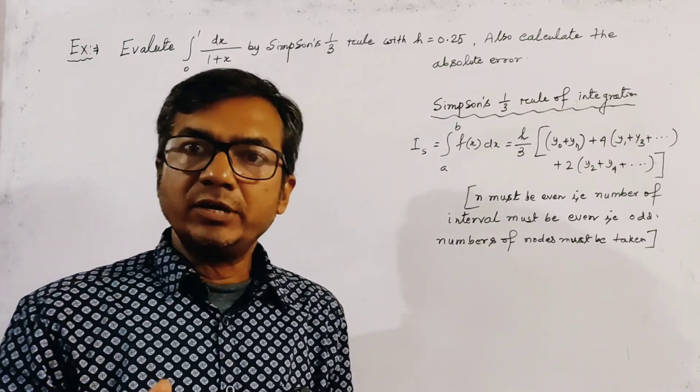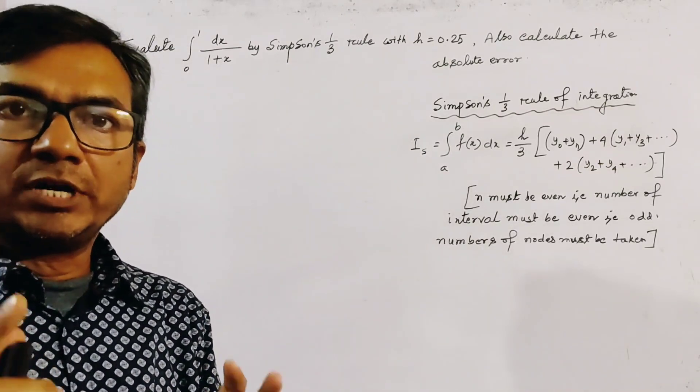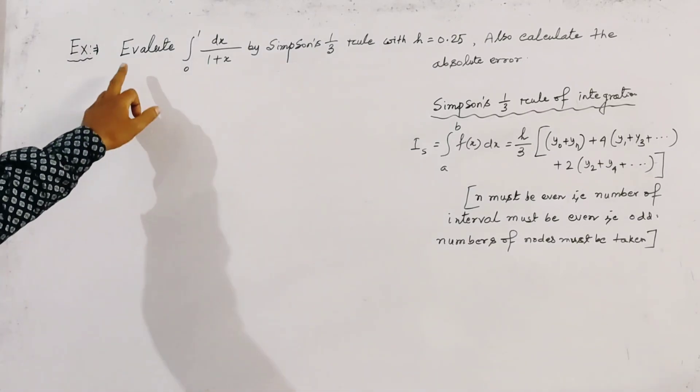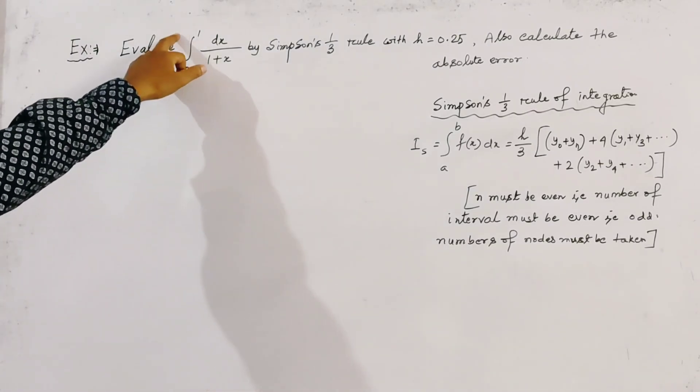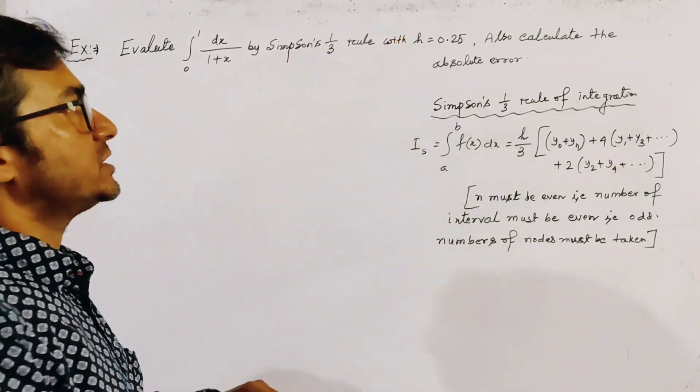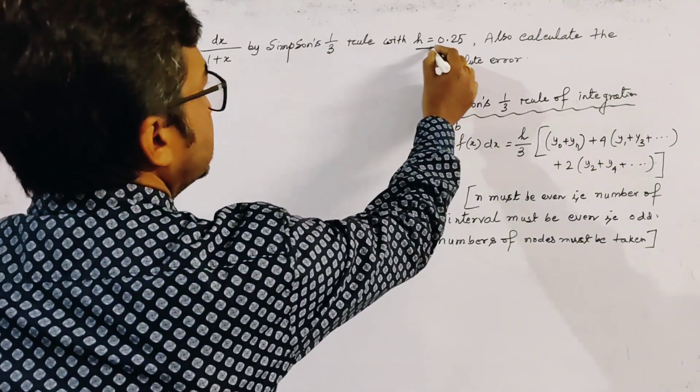This is an application of Simpson's one-third rule of integration. The problem is: evaluate the integration from 0 to 1 of dx/(1+x) by Simpson's one-third rule with step length h equal to 0.25.